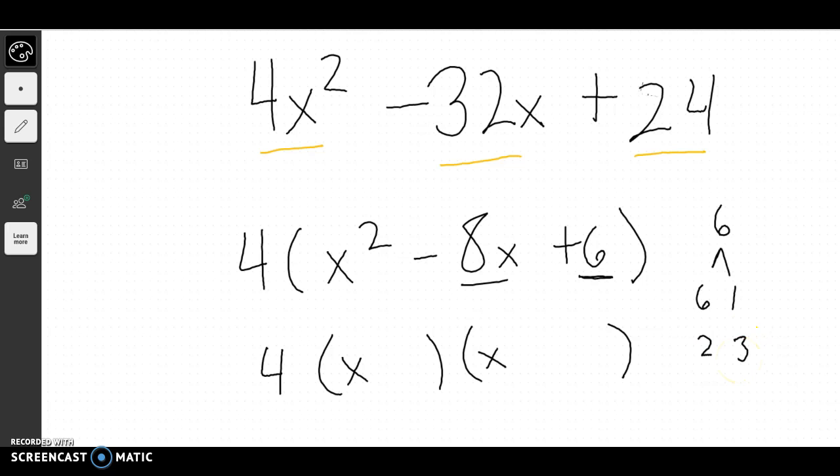And there would be nothing that would multiply together to give me 6 but add together to give me negative 8. So this one actually won't factor any further. Sometimes you can make things factor further, and sometimes you can't. If you can't make something factor further, you just leave it. If you can, you factor further.